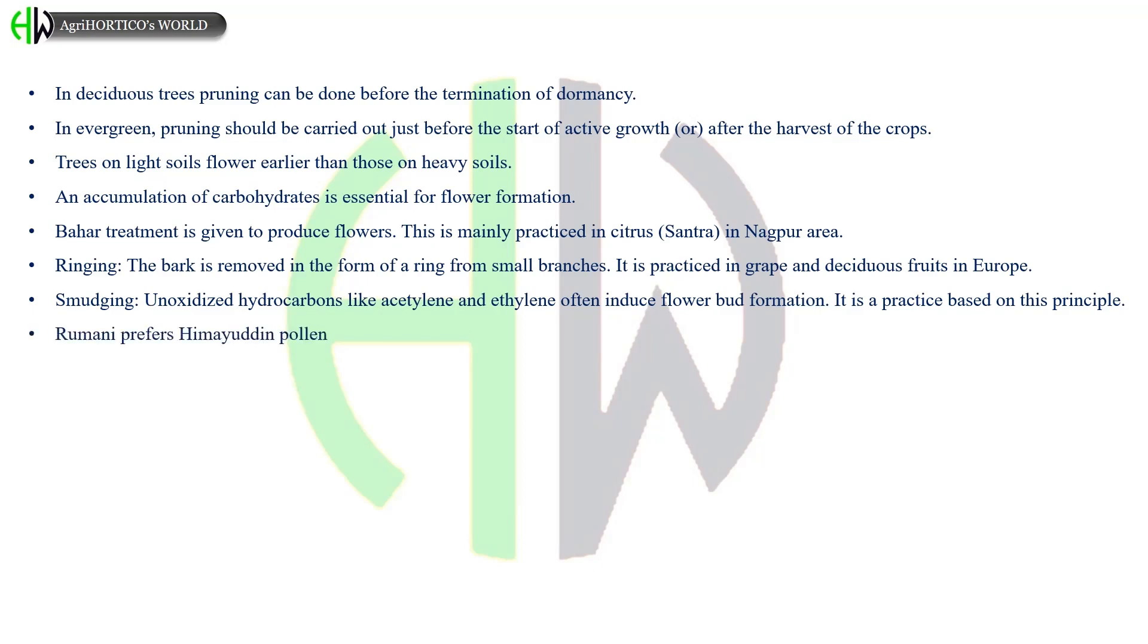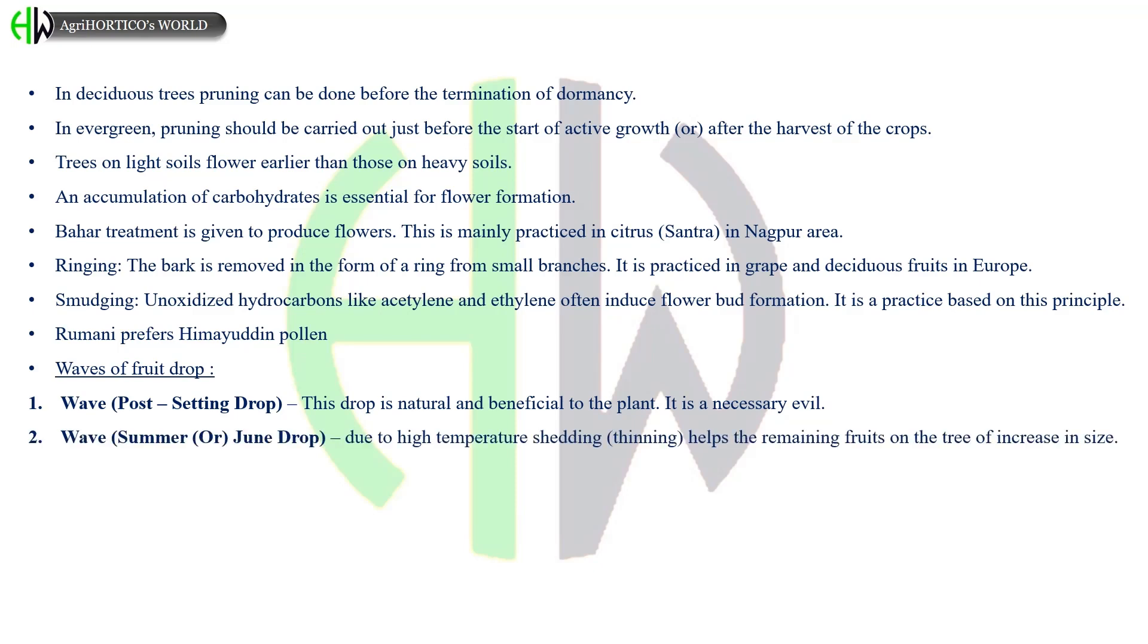Waves of fruit drop are as follows: post setting drop - this drop is natural and beneficial to the plant. Summer or June drop is due to high temperature. Shading or thinning helps the remaining fruits on the tree to increase in size. Pre-harvest drop, which cause heavy losses. Late rains may prolong the vegetative growth and also delay or reduce flowering as in mango. It can be remedied by drying out the soil by deep plowing and probably by artificial inhibition of growth by growth inhibitors.